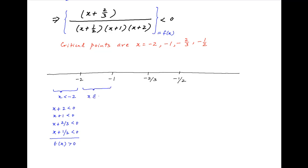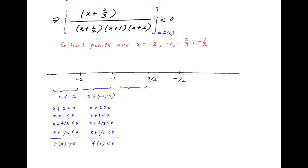Moving on to the next interval, when x lies between minus 2 and minus 1: (x plus 2) is positive, but (x plus 1) is negative, (x plus 2/3) is negative, and (x plus 1/2) is also negative. Therefore, f(x) is negative in this interval.